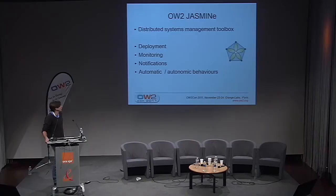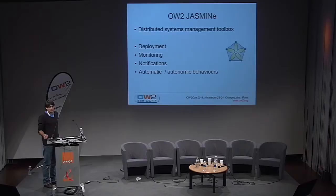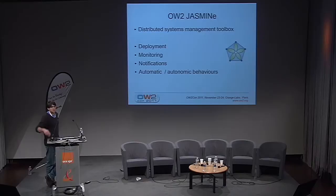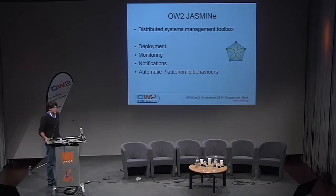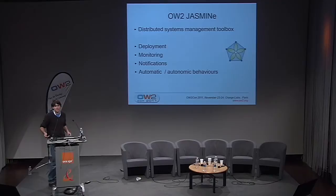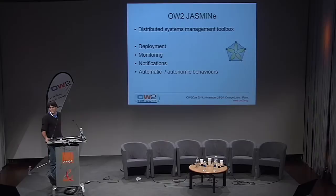Jasmine provides several features: deployment, monitoring, probes, a web console to visualize graphs, and notification mechanisms. We also implement autonomic behaviors for automatic reconfiguration of a system — in a cloud context this fits very well with elasticity. We already implemented this in a founding project like Forecast.